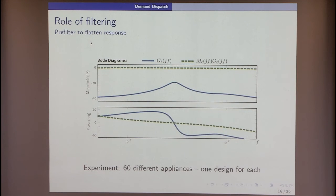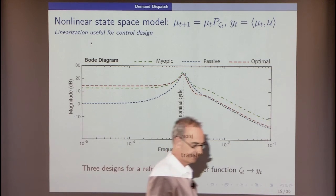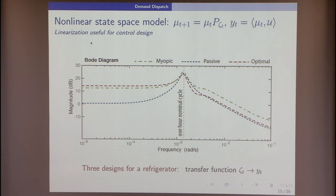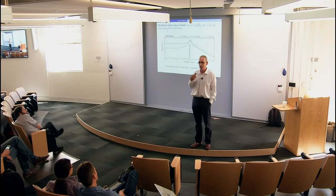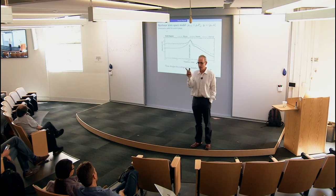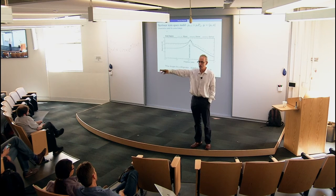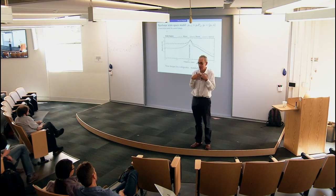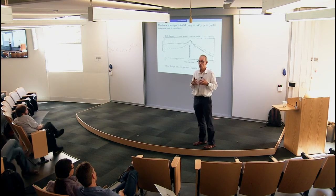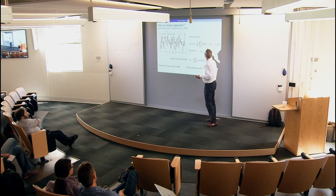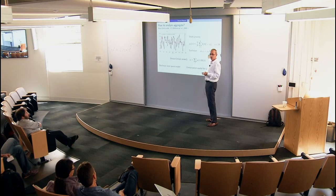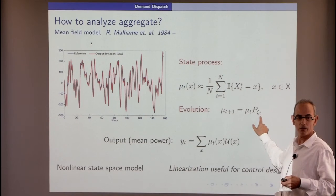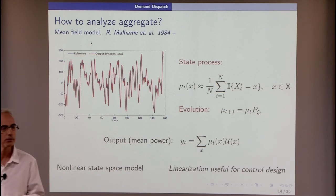Quick question about why we need randomization. We're trying to do this with one-way communication — broadcast a signal to the loads and they take care of themselves. Randomization smooths out the response and gives more degrees of freedom. Through randomization you get a smooth linear state-space model with smooth dynamics — you can make this thing a linear state-space model with smooth dynamics only through this randomization.